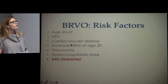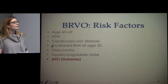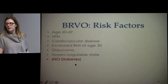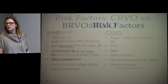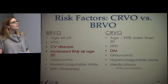Risk factors for branch vein occlusion: patients are typically in their 60s, with hypertension, cardiovascular disease, and increased BMI at age 20. You'll note that cardiovascular disease and BMI at age 20 are not on the central vein occlusion risk factor list. Also, diabetes did not make it as an independent risk factor for branch vein occlusion from the Eye Disease Case Control Study — that's a pretty typical OCAPS question. So comparing the two: branch vein occlusion has cardiovascular disease and BMI at age 20, while for central vein occlusion, diabetes is on the list.